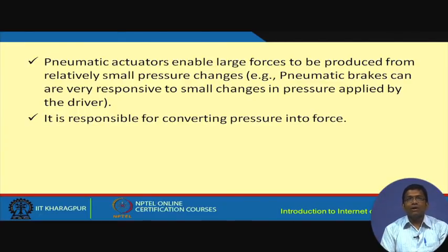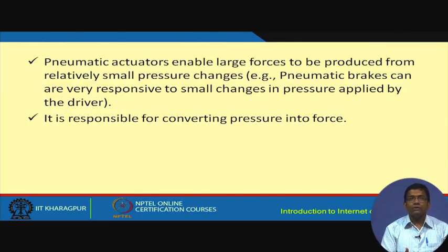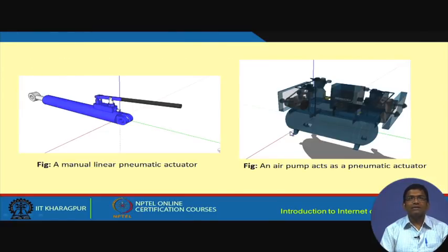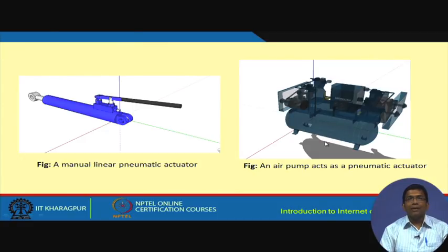The advantage of pneumatic actuators is that they are very responsive to small changes — if the brake is pressed a little, they act quite fast. The pressure put on the brake is converted into force very quickly. Here is a figure of a pneumatic actuator: when pressure is applied, this shaft moves. This is an example of an air pump acting as a pneumatic actuator.